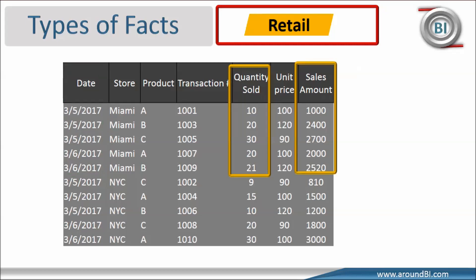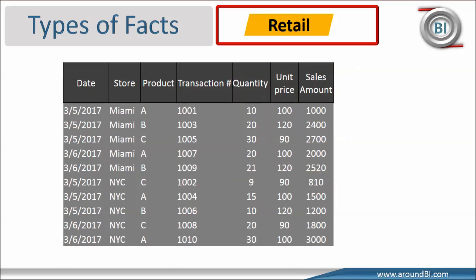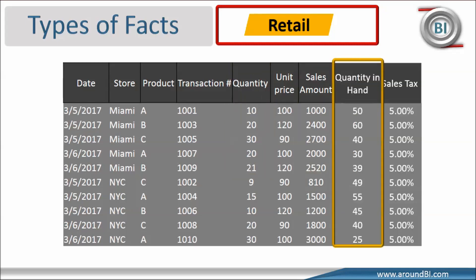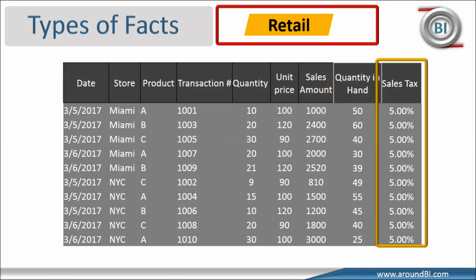Sales amount is another additive fact in our structure. Before moving to the next topic, let's modify our table fields and add a few more data points. I am pulling in quantity on hand, which tells how much inventory is available in a store, and sales tax on transaction, which is fixed at 5%. Both new fields are numeric and are facts.